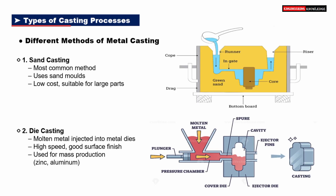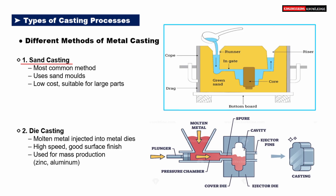Let's understand the types of casting processes. The first method is sand casting — the most common and economical method, which uses sand to create the mold. The mold is divided into two parts: cope at the top and drag at the bottom. Molten metal is poured into the sprue, flows through the runner, and enters the cavity via the ingate. A core is placed inside the mold to form any hollow section. Green sand supports the entire structure, and a riser is provided to compensate for shrinkage during cooling. Sand casting is ideal for large parts and has a low production cost.